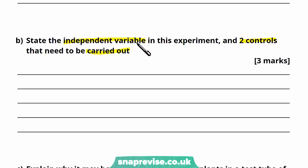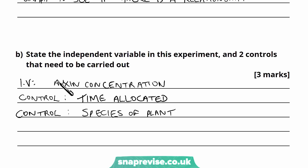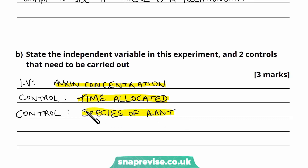The independent variable is the one we've deliberately changed to see how it affects something. The dependent variable is the one we measure to see how the independent variable affected it. The controlled variables are things we keep the same to make the experiment fair. In this case the independent variable is the auxin concentration. Two controls I've mentioned: one is the time allocated — we have to keep the time for each stem the same, otherwise stems given more time may curve more despite having a weaker auxin concentration. The other control is the species of plant, because different species can curve more than others, so it would be misleading to compare, say, bamboo to a rose based purely on auxin concentration.